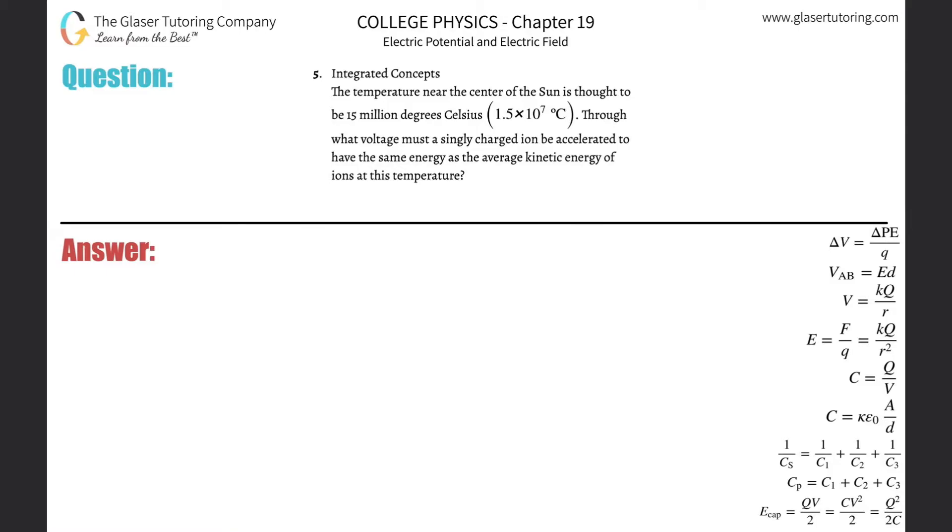Number five, integrated concepts. The temperature near the center of the sun is thought to be 15 million degrees Celsius. Through what voltage must a singly charged ion be accelerated to have the same kinetic, excuse me, the same energy as the average kinetic energy of the ions at this temperature?